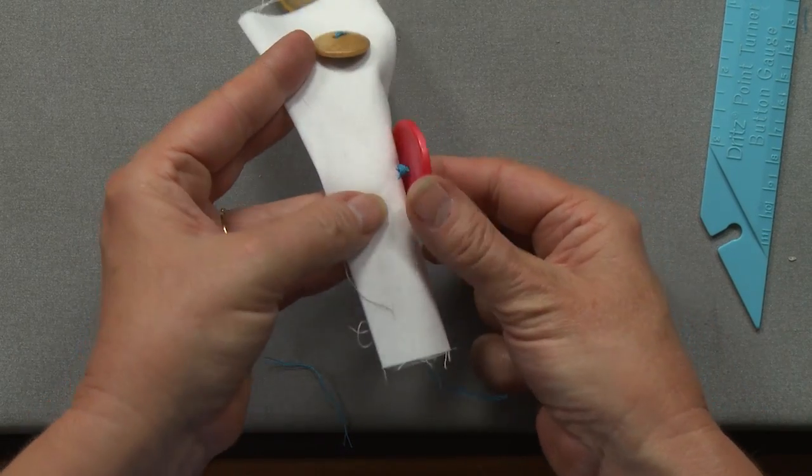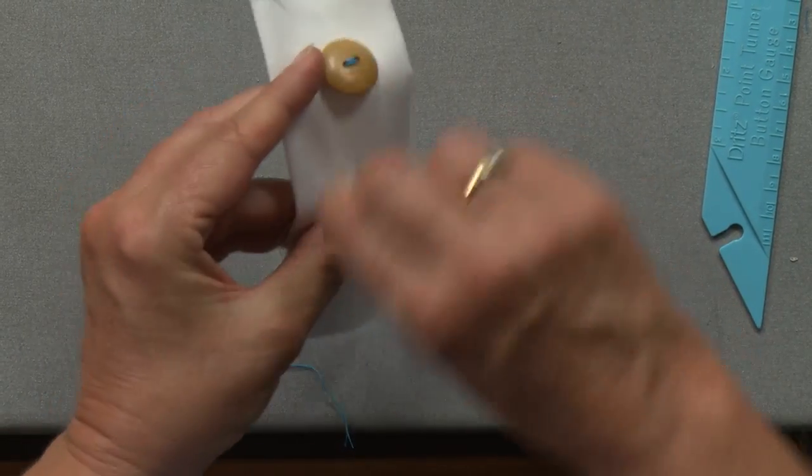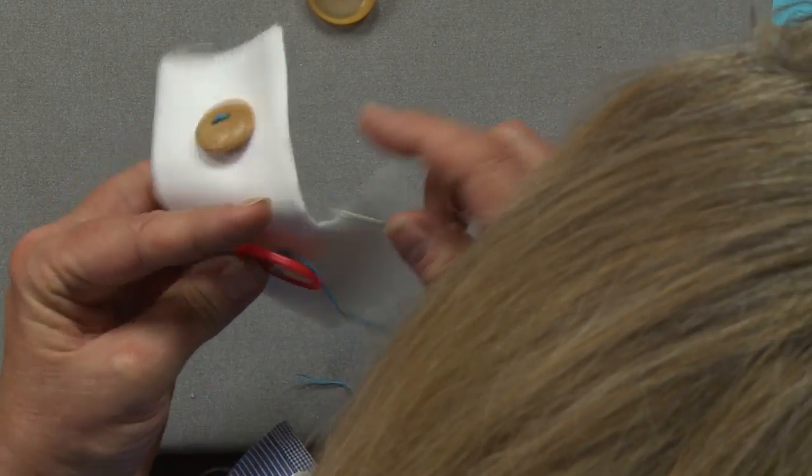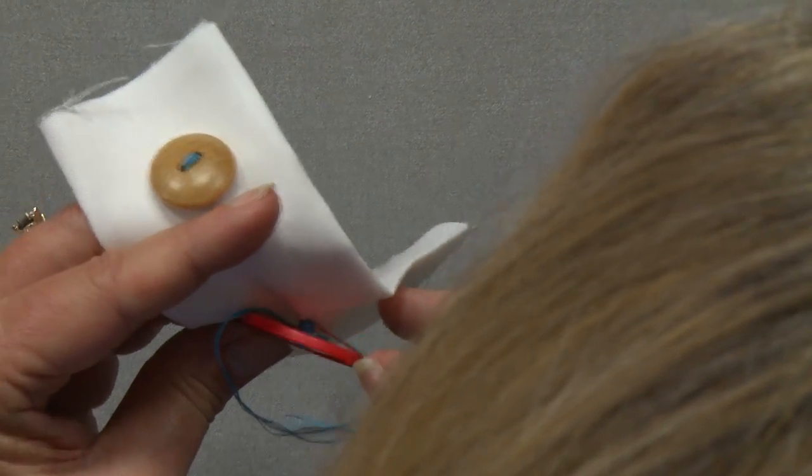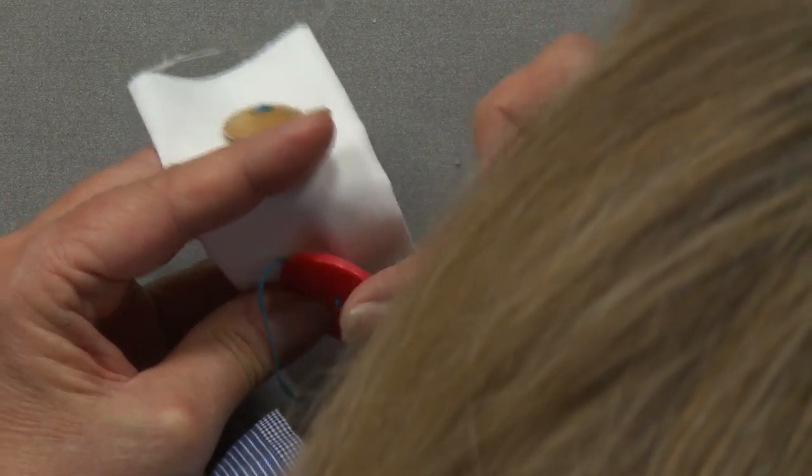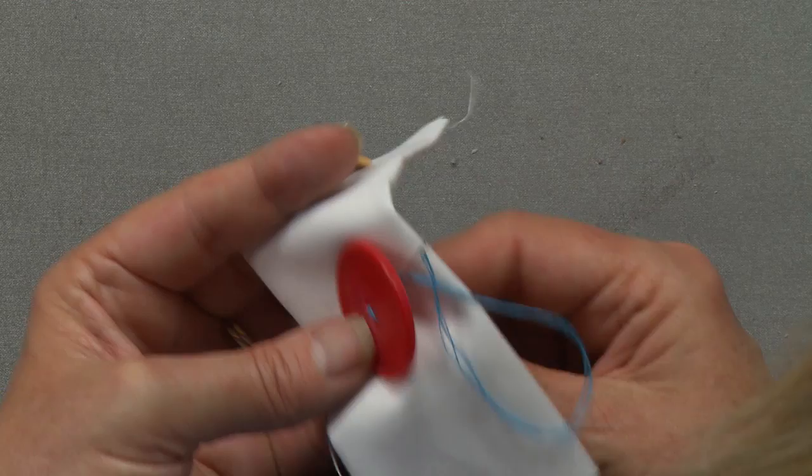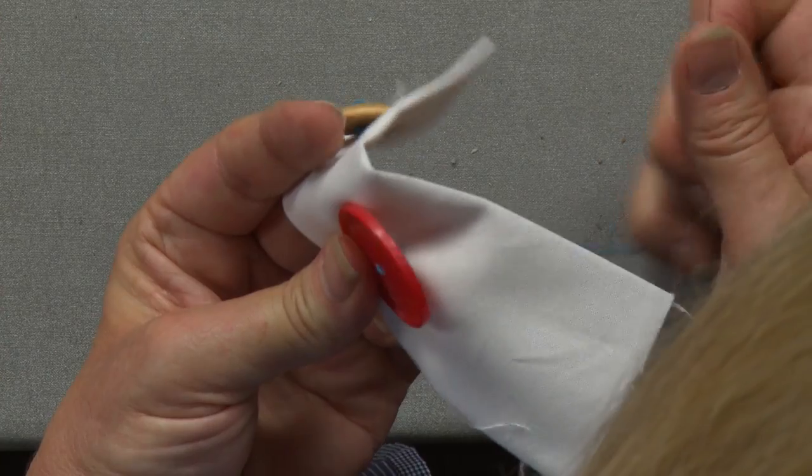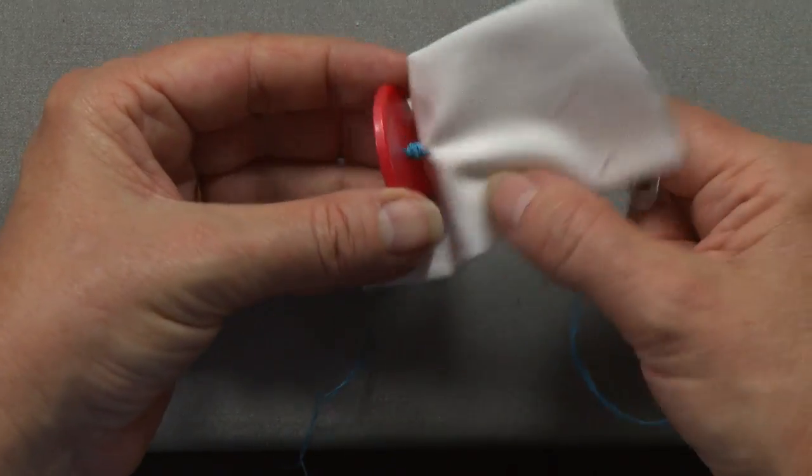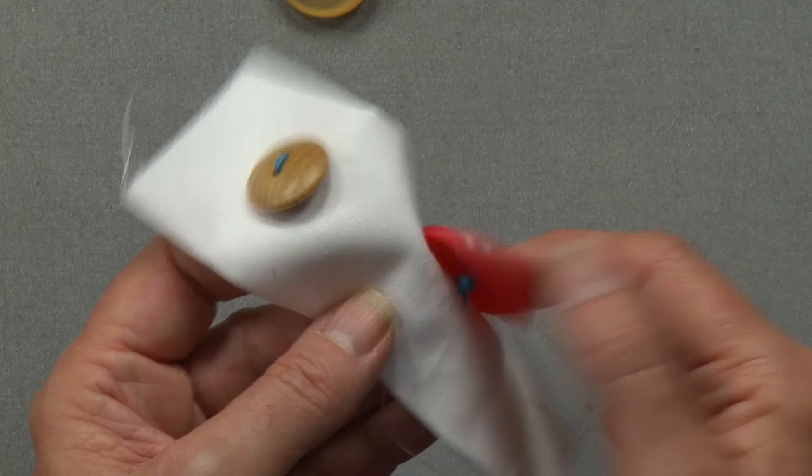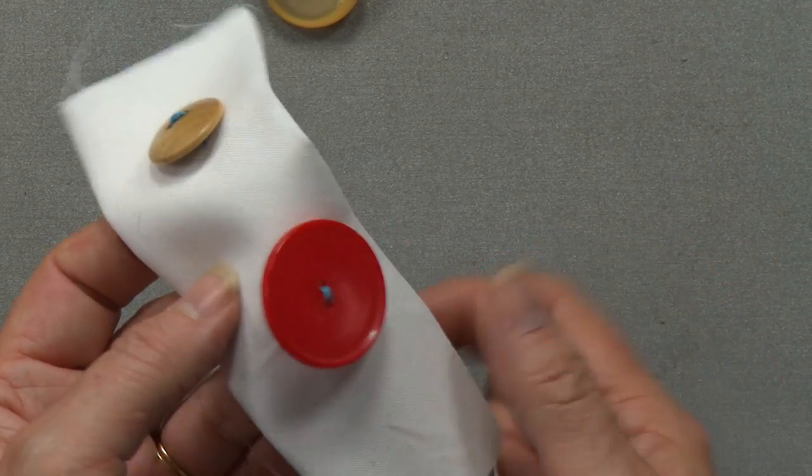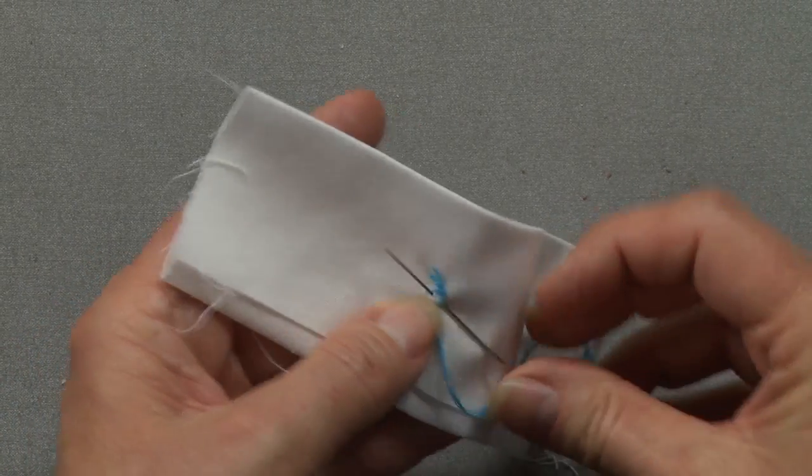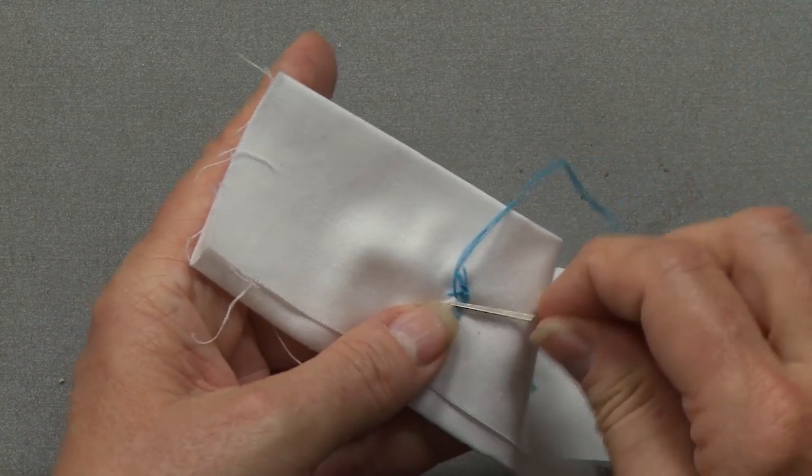Then when you're done, I like to, if at all possible, take my thread through the shank if I can get it in there. If not, it's alright. Then you're simply going to come down, and you can see how you have that nice shank there that now lifts up to make it much easier for your button to be buttoned through thick fabric. Then we simply go ahead and finish knotting off our button, or rather knotting off the thread. I guess it would be hard to knot a button.